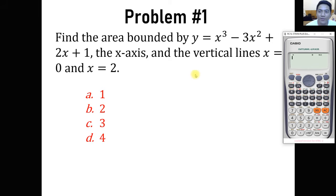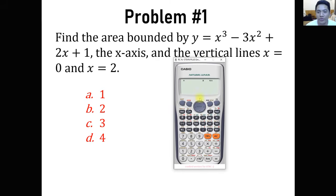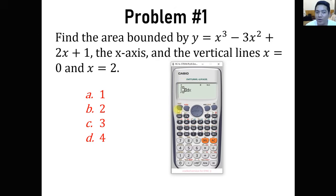Let's get started. For the first one, find the area bounded by y equals x cubed minus 3x squared plus 2x plus 1 and the x-axis and the vertical lines x equals 0 and x equals 2. The formula that we are going to use is of course the integral. And whenever we are trying to find the area, the equation we input in the integral must have an absolute value.